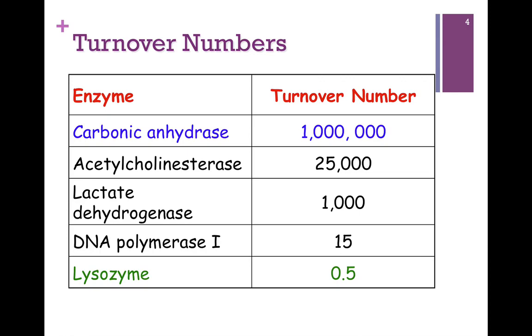Let's look at some comparative turnover numbers. Here's carbonic anhydrase at the top of our list, pretty impressive at a million. Look at the bottom of the list - lysozyme at 0.5. In the time it takes lysozyme to carry out its reaction once, carbonic anhydrase has done it two million times. That's quite a difference, and as you can see from the list there's quite a lot of variability in terms of that turnover number.